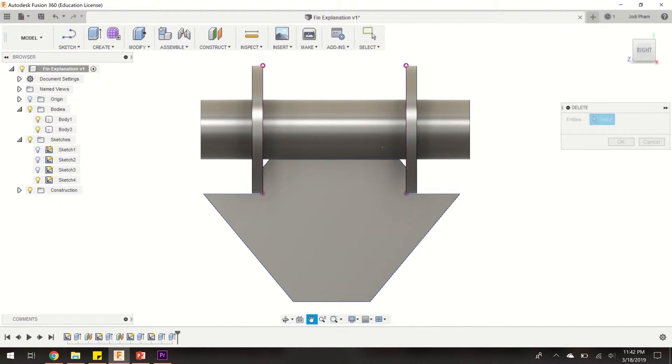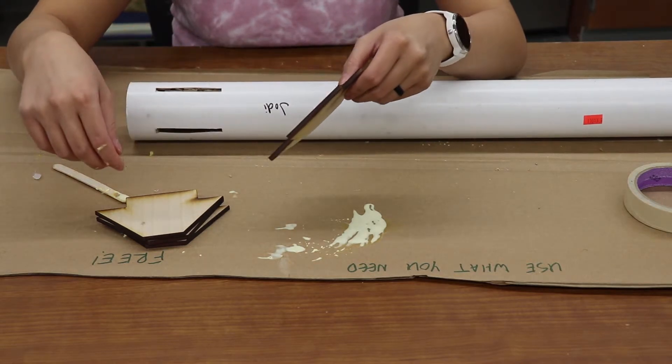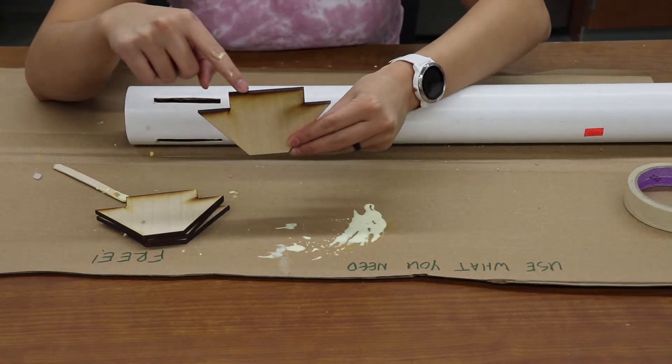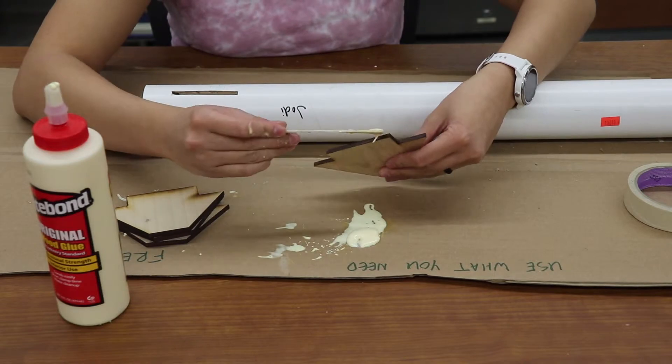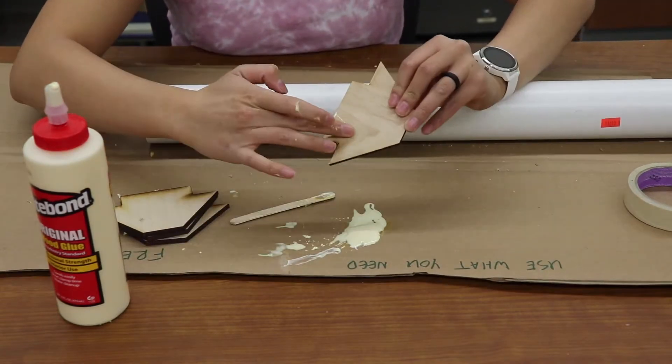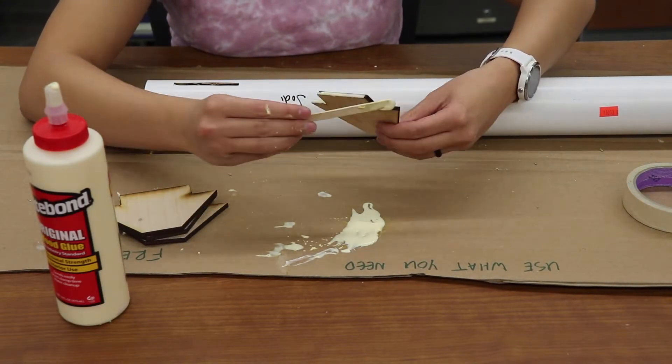To begin gluing our fins, we're going to put glue in two main places: on the fin tab and on the root cord. You can use a popsicle stick to spread the glue along the edges of the fin tab and the root cord. Don't be shy to use a good amount of glue because you really want the fins to be glued in place well.